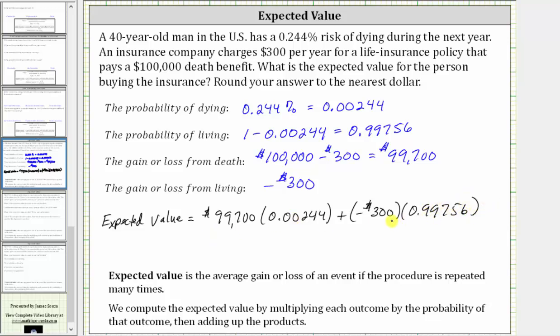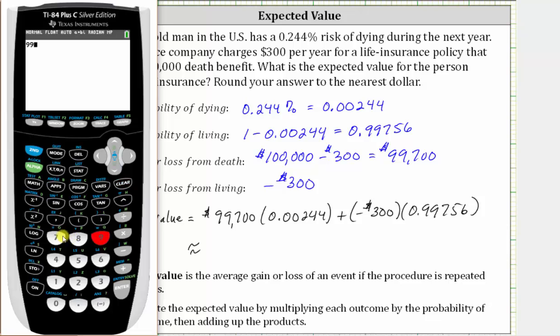And now we need to find the sum of these two products. And we're told to round to the nearest dollar. So going to the calculator, we have 99,700 times 0.00244, and then plus negative 300 times 0.99756, and enter.